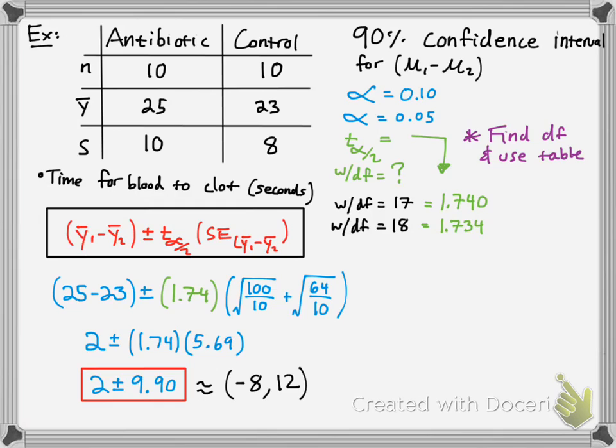So we have an antibiotic and a control group. So we're testing to see is there a difference in time for blood to clot if you have the antibiotic and if you don't. And what this interval tells us is that we're 90% confident that the clotting time for the difference between those two means, there's a 90% chance that the difference lies between these values. Now if our difference was zero, that means that the two samples have the same average, exactly the same. So that means the means are the same.